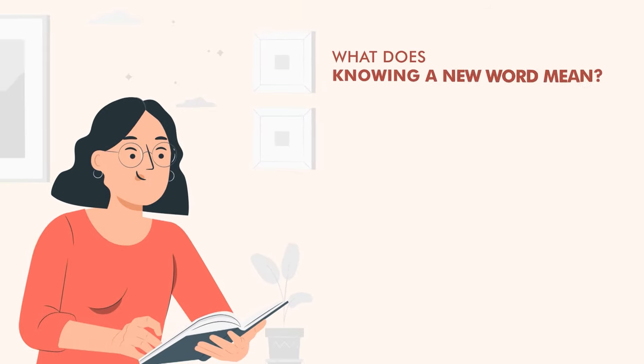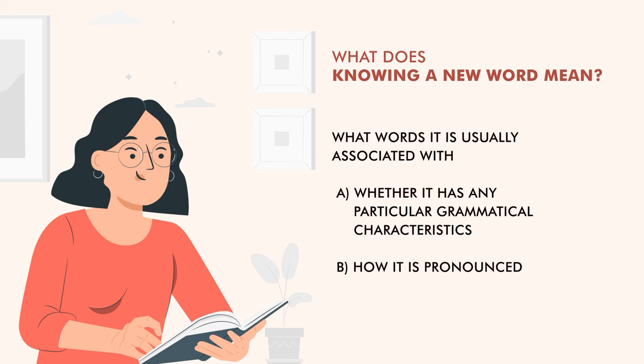What does knowing a new word mean? It primarily means what words it is usually associated with, whether it has any particular grammatical characteristics, and also how it is pronounced. So knowing a word is quite a lot. You have to know what words it is associated with, what are some of the grammatical characteristics, and how it is pronounced. So it's a big job.